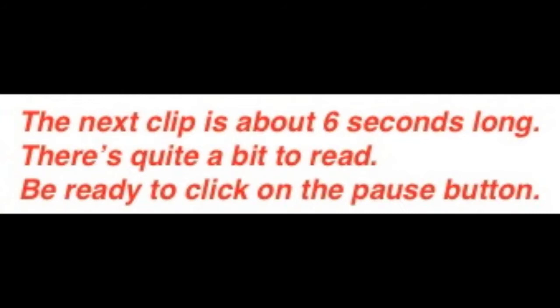One inch is just the number I like to use — you can use any number you want: a half inch, a quarter inch, an eighth inch. But when you plug that number into the formula, you've got to make sure you multiply by the correct corresponding depth. I like one inch because it's simple — one times one is one. Once you've plugged all your numbers into the compression ratio formula, you now know the static compression ratio of your engine.